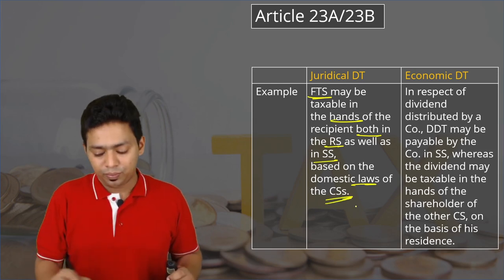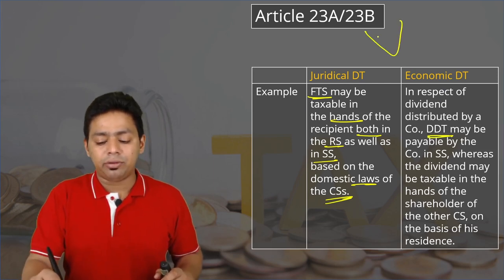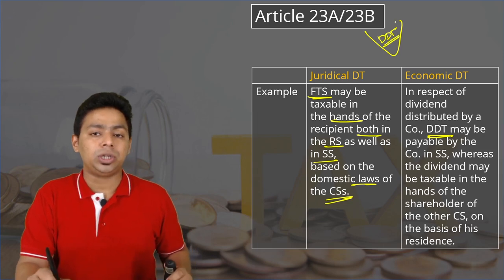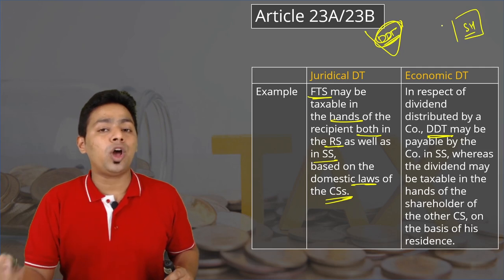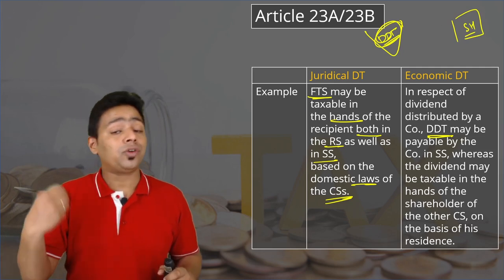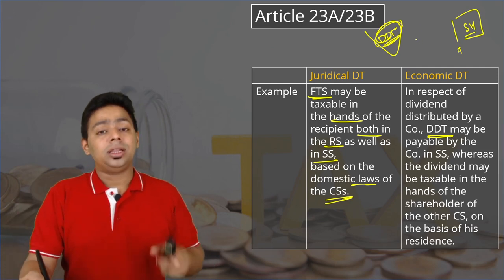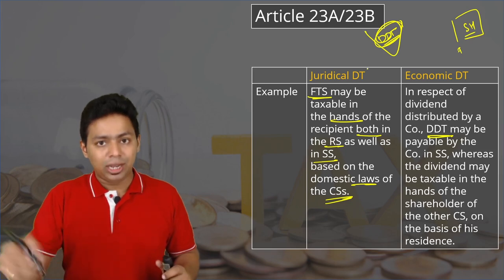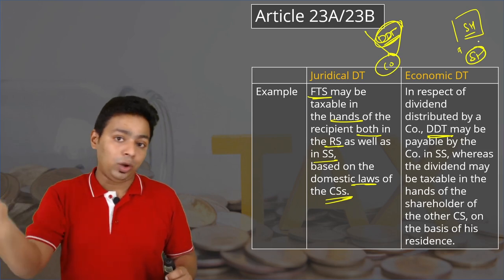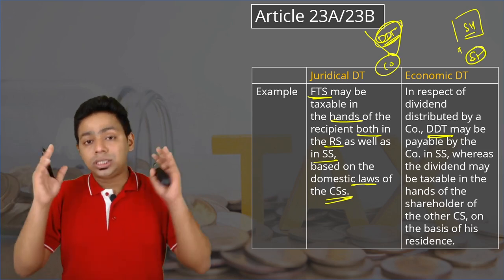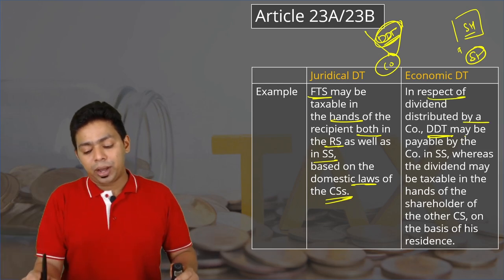An example of economic double taxation is the Dividend Distribution Tax (DDT). Under DDT, a company pays dividend distribution tax and in the hands of the shareholder the dividend becomes exempted under Indian law. But according to foreign country law, dividend is taxable. So the same income — the dividend — has been taxed at the company level and is also taxed in the hands of the shareholder in the foreign country, in respect of the same dividend distributed by the company.